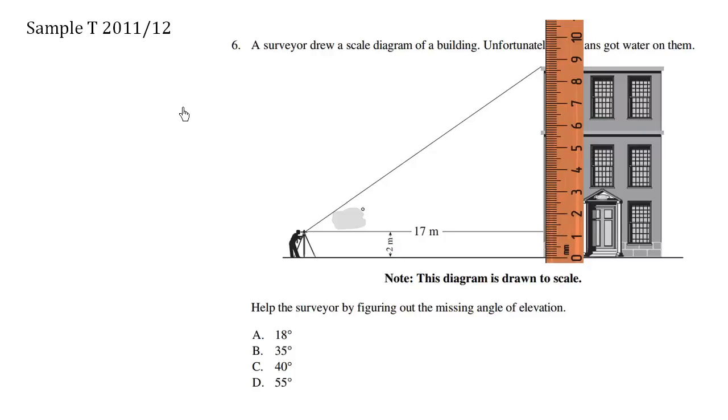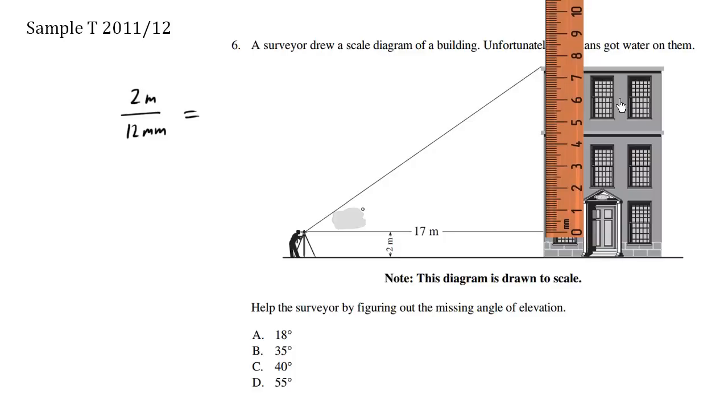So the ratio we set up here is going to be 2 meters over 12 millimeters equals... and what I'm interested in is the actual height of this triangle. So I'm going to take this ruler and shift it up here so that now we're interested in this height, approximately 7.5 centimeters or 75 millimeters.